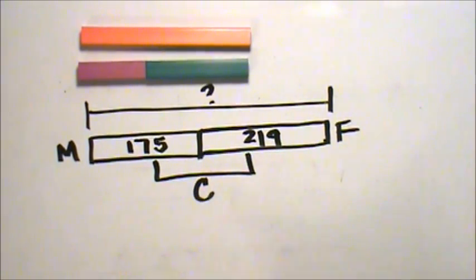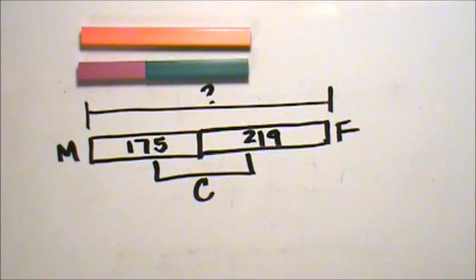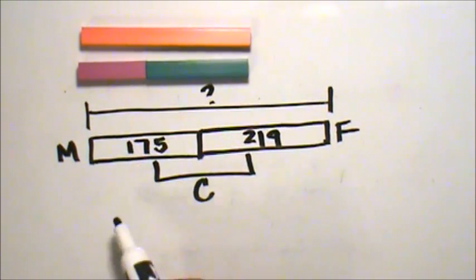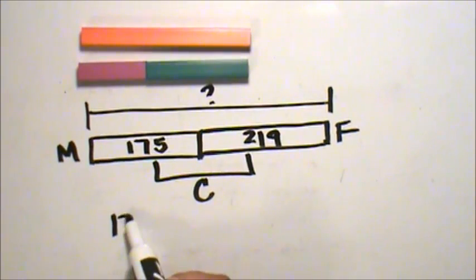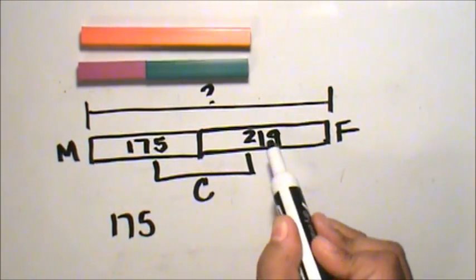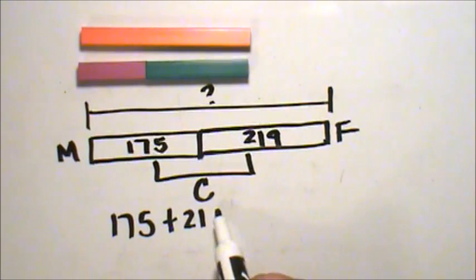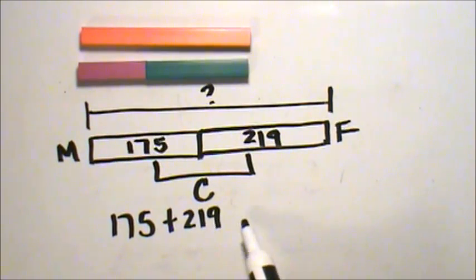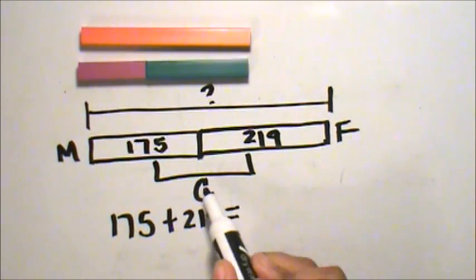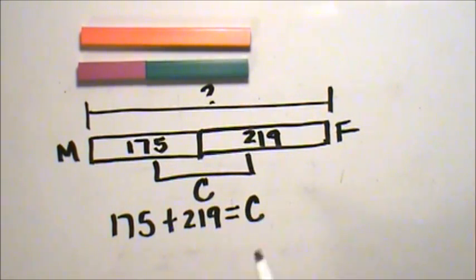C is the total number of cans collected. Now I can use my strip diagram to write my equation: 175 plus 219 equals C, the total number of cans collected.